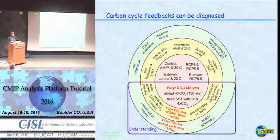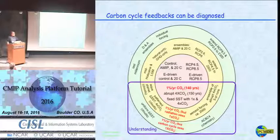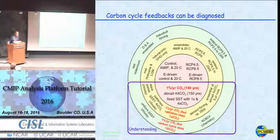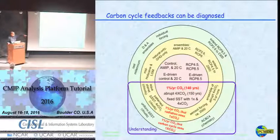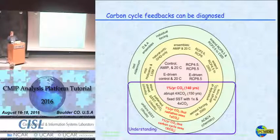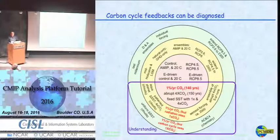There's also the 1%-per-year idealized CO2 increase run, where you start at pre-industrial levels and increase CO2 at 1% per year. This is a traditional run carried through from one of the earliest phases of CMIP. It's a more realistic imposition of CO2 change than the abrupt 4×CO2 experiment, yet simpler than the RCP scenario runs.